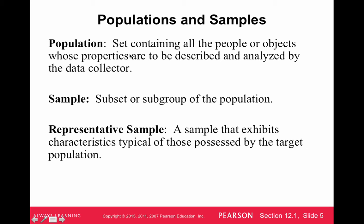Usually, in order to get information from the population, we collect what's called a sample. A sample is just a subset of the population. When we sample, we want to make sure we have a representative sample — one that exhibits characteristics typical of those possessed by the target population. We don't want bias in our sample, such as only asking people with certain opinions about a political question.